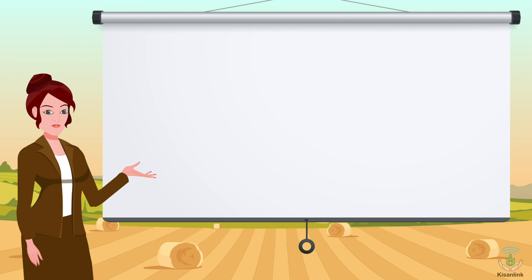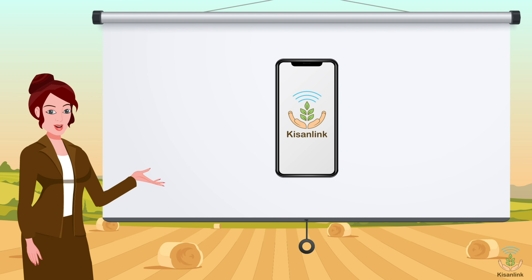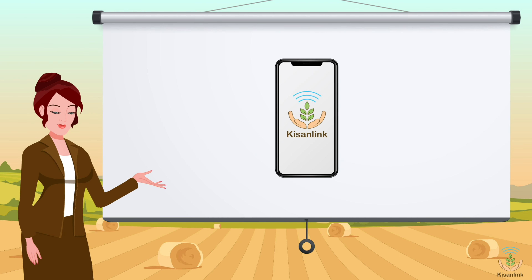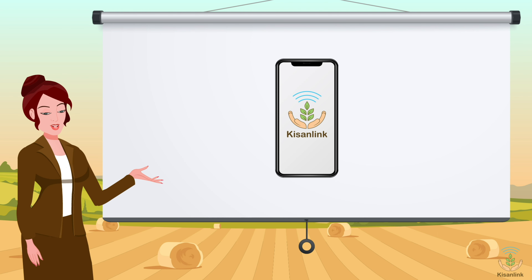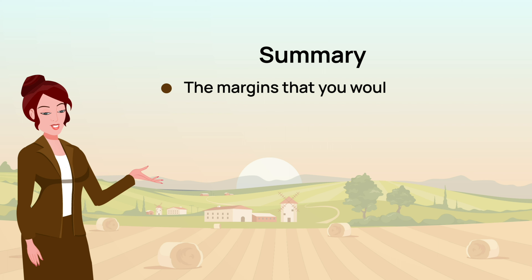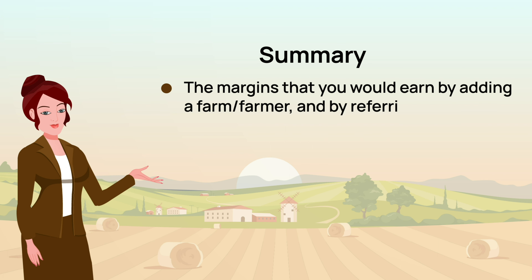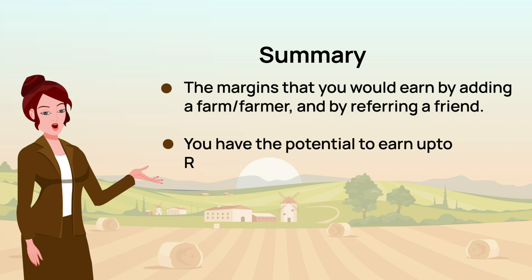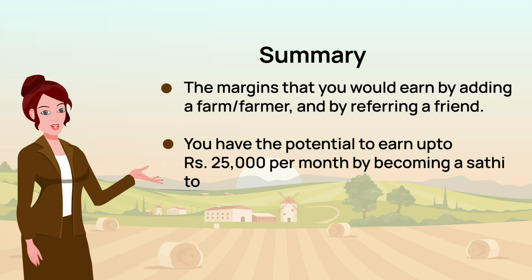I hope now you are ready to get started with our Kisanlink mobile application. In this chapter you have understood the margins that you would earn by adding a farmer and by referring a friend. You have the potential to earn up to 25,000 rupees per month by becoming a Sathi to our farmers.